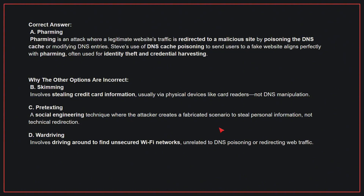Why the other options are incorrect: B, skimming — this involves stealing credit card information. C, pretexting — this is a social engineering technique where the attacker creates a fabricated scenario to steal personal information, not technical redirection. D, war driving — this involves driving around to find unsecured Wi-Fi networks, unrelated to DNS poisoning or redirecting web traffic.